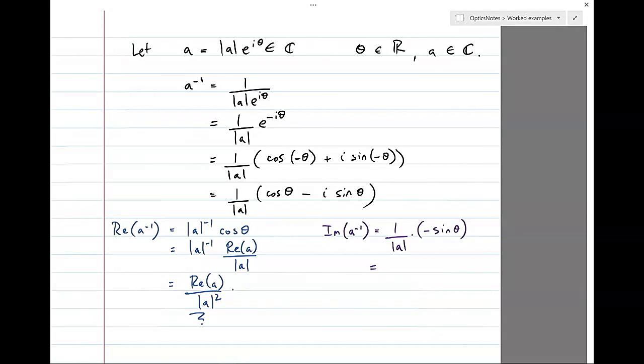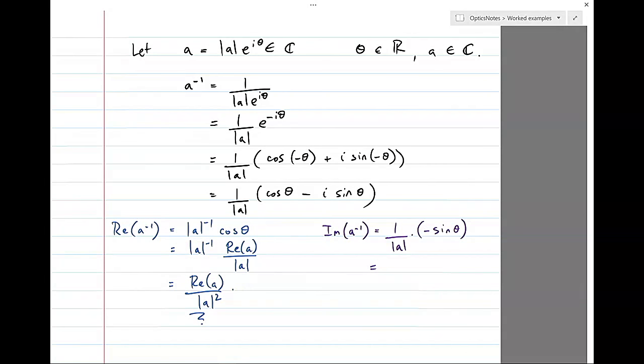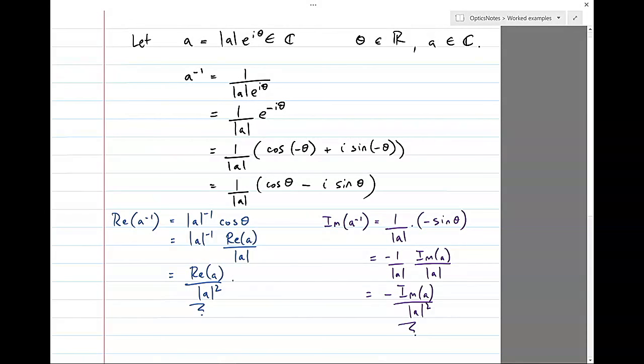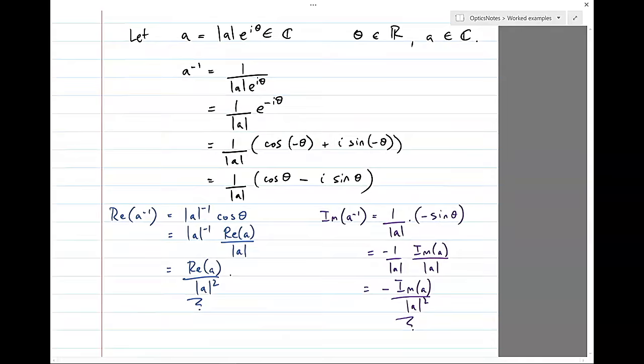Okay. So we've performed the same trick, identifying that sine of theta is simply the imaginary part of A divided by A, or modulus of A. And we get a very similar identity relating the imaginary part of 1 on A to the imaginary part of A. Okay. We can straight away use the fact that we've got these identities to figure out W of Z and R of Z now.